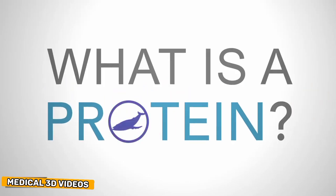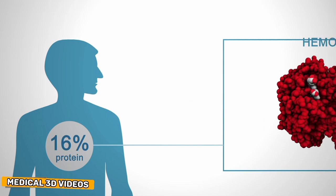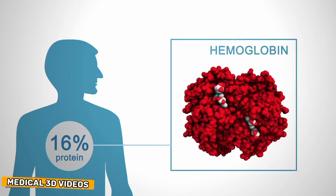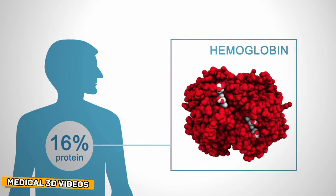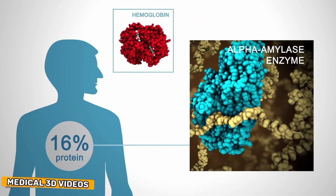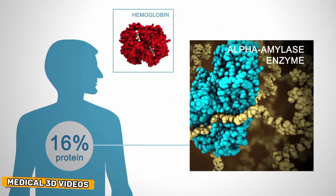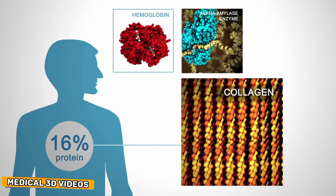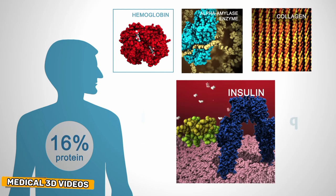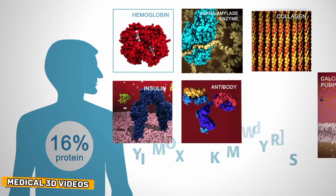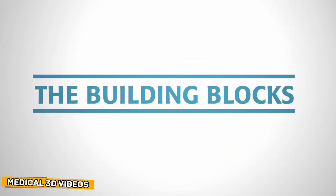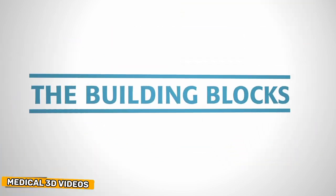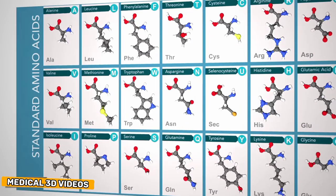Proteins play countless roles throughout the biological world. Some transport nutrients throughout the body. Some help chemical reactions to happen at faster rates. Others build the structures that make up living things. Despite this wide range of functions, all proteins are made out of the same 21 building blocks, called amino acids.